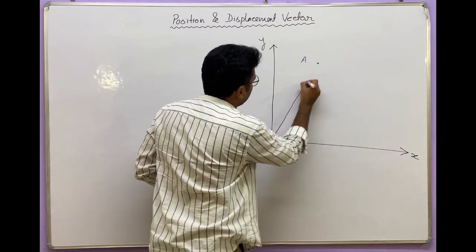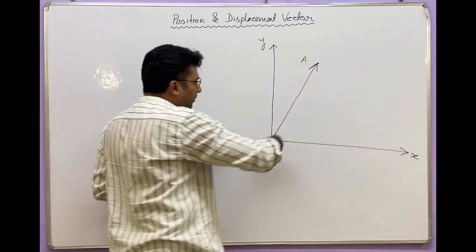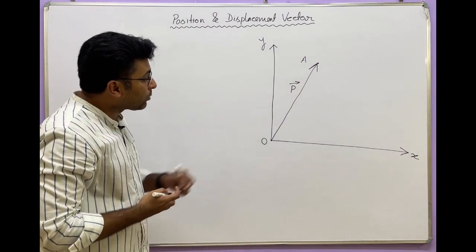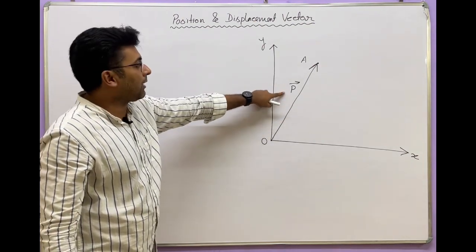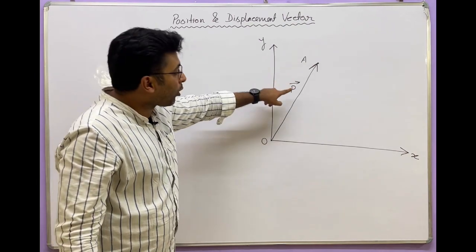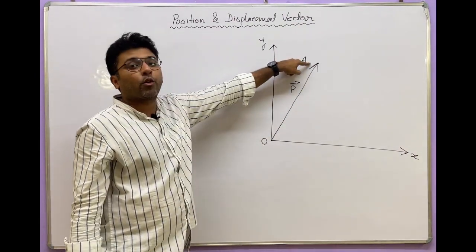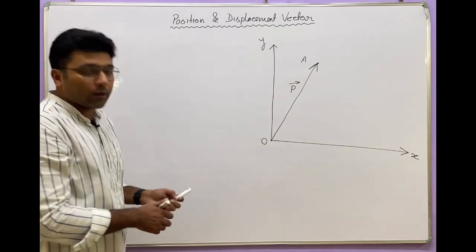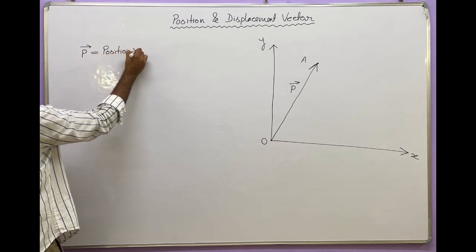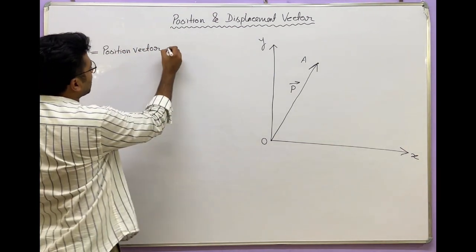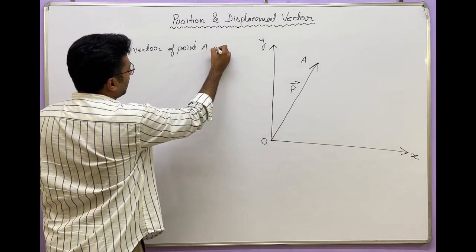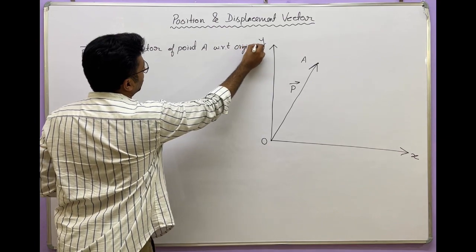Suppose I have a point A. I draw a line from the origin to point A and call that vector the P-vector. So this is the position vector P. This P-vector is the position vector of point A with respect to the origin O.